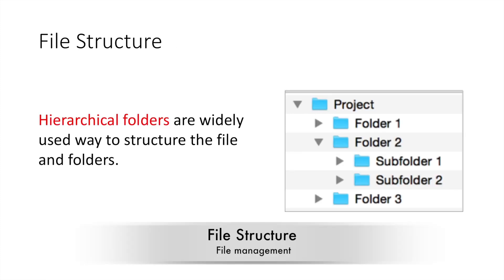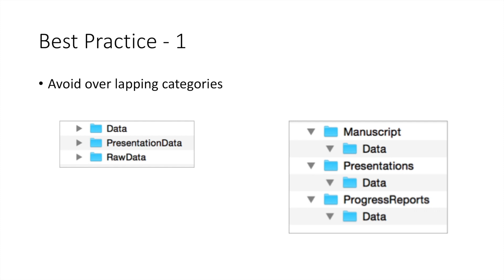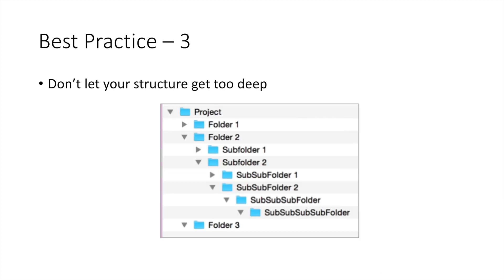The last section is file structure — about how we handle folders. No matter whether you use Windows or Mac, we always use a hierarchical folder structure. Best practice one: avoid overlapping categories. The second example shown is very clear — you know where to put your data — but the first one is confusing. Best practice two: don't let your folders get too big, as it's too hard to find your files. Best practice three: don't let your folder structure get too deep, or you won't be able to find things.